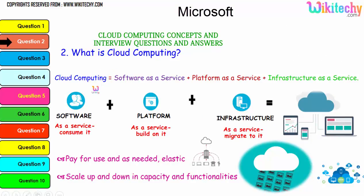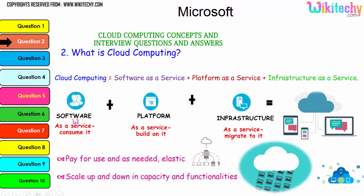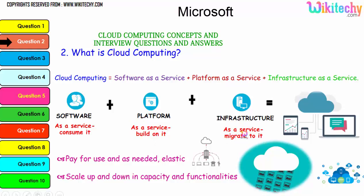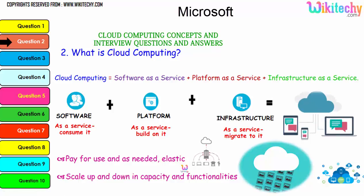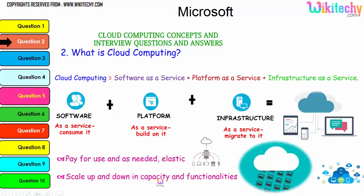Cloud computing consists of Software as a Service (SaaS), Platform as a Service (PaaS), and Infrastructure as a Service (IaaS). The collaboration of software, platform, and infrastructure is referred to as cloud computing. A major advantage is the pay-for-use model — if you need minimal storage, pay for that; if you need more, pay for more. It's also elastic: you can scale up and down capacity and functionalities.